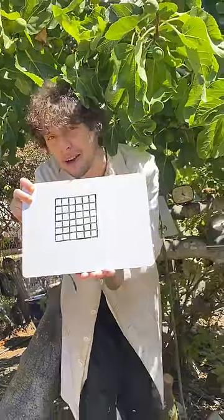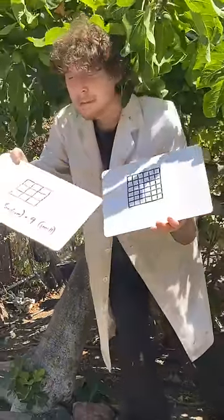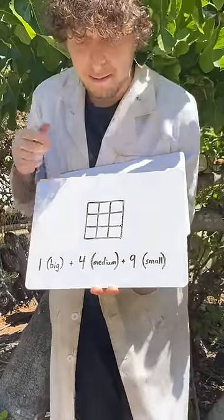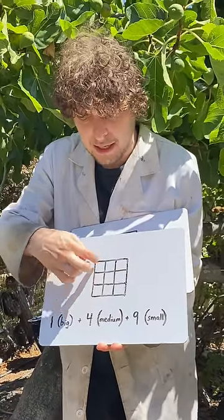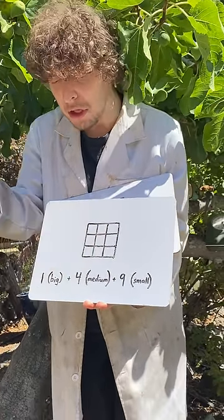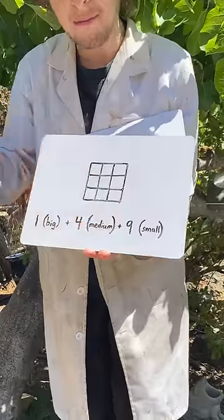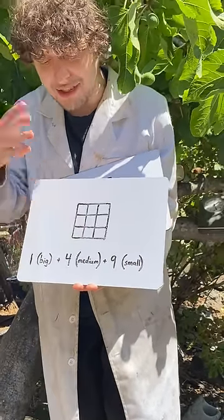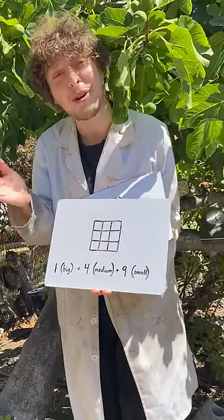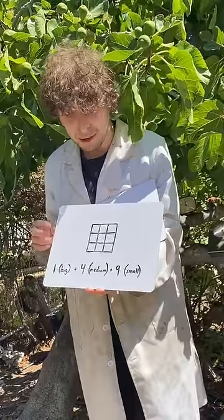To find a pattern, let's look at a size in between. In a three by three, you have one big, four medium, and nine small. And look, these are our square numbers. So the total amount is the sum of the first three square numbers, also known as the third square pyramidal number.